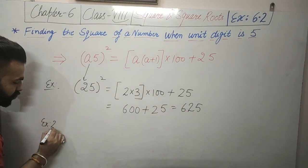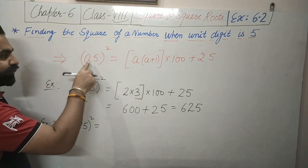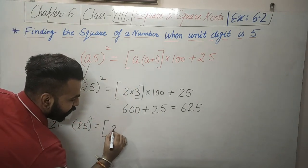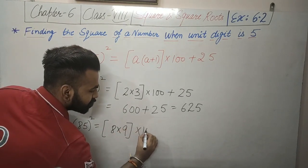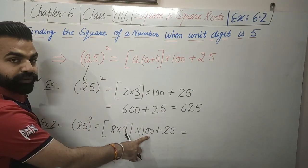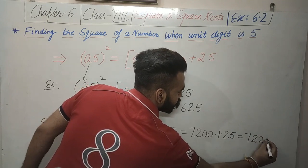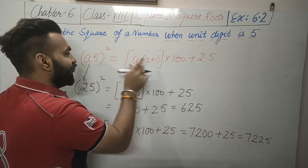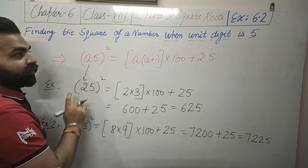Example number 2: 85 squared. Here a is equal to 8. So 85 squared equals 8 into (8 + 1), which is 8 into 9 equals 72. Then 72 into 100 is 7200, and 7200 plus 25 equals 7225. This method is only applicable when the unit digit is 5.